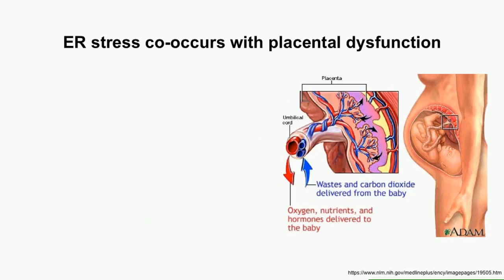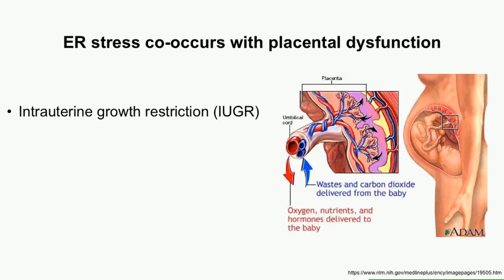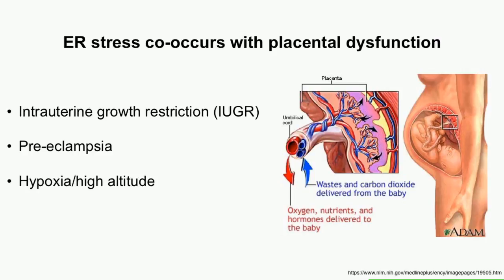The placenta is a really interesting organ. It acts as the interface between the mother and fetus — the mother delivers oxygen, nutrients, and hormones through the blood supply through the placenta into the fetus, and waste and carbon dioxide are removed from the fetus as well. There are a number of events that can cause placental dysfunction during pregnancy, and what's really striking is that in almost every case, there's a signature of ER stress in the placenta. These conditions include intrauterine growth restriction (IUGR), preeclampsia, and even high-altitude hypoxia — women who have adapted to sea level and move to Utah at 5,000 feet show signs of ER stress in their placenta.